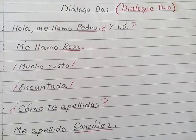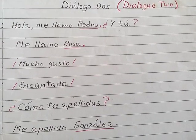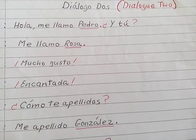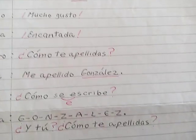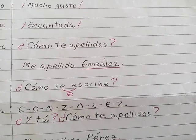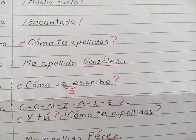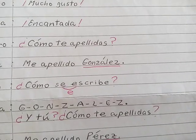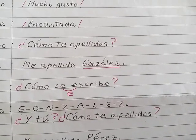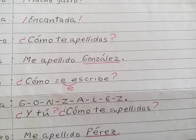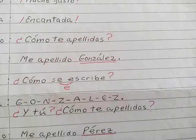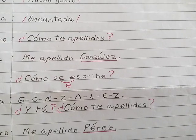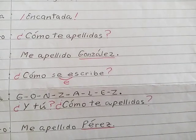¿Cómo te apellidas? Mi apellido González. ¿Cómo se escribe? G-O-N-Z-A-L-E-Z.